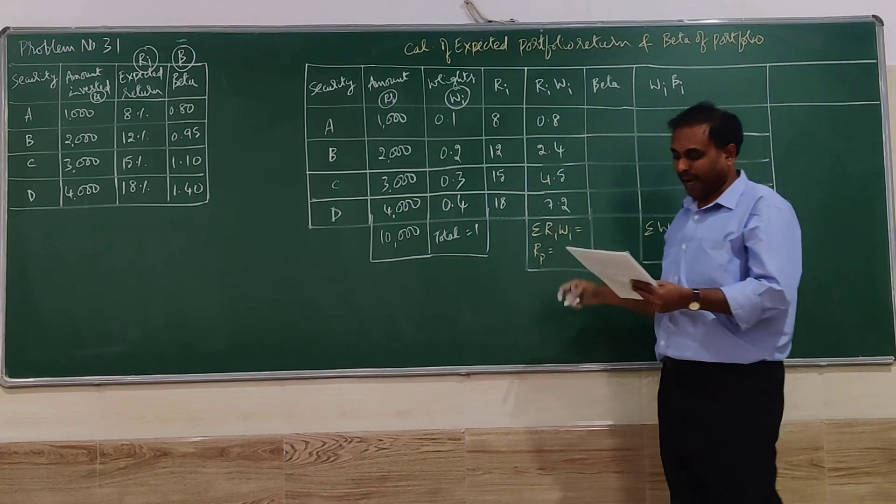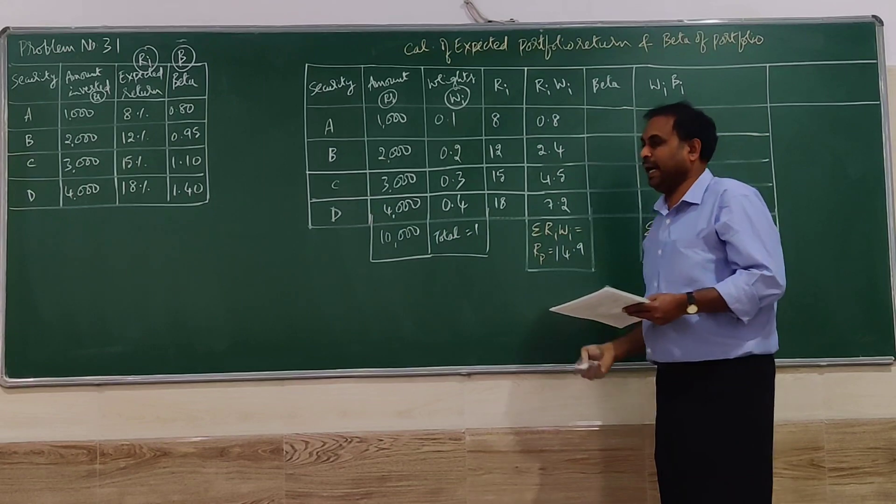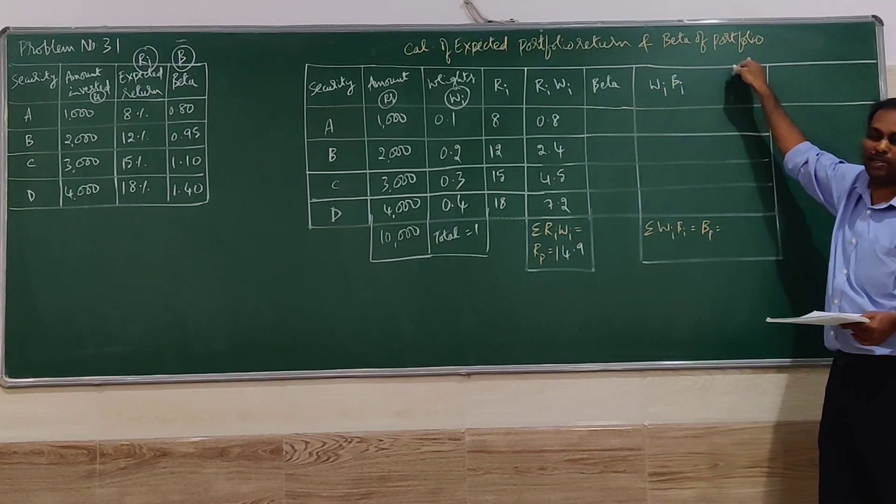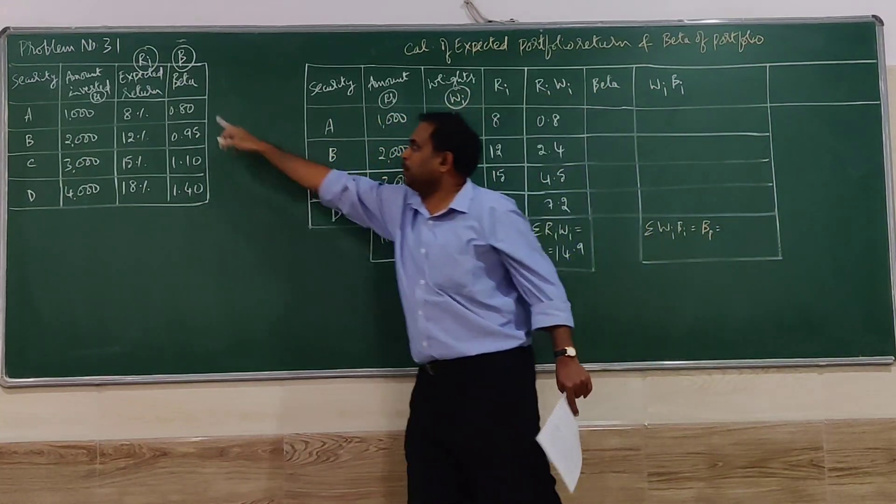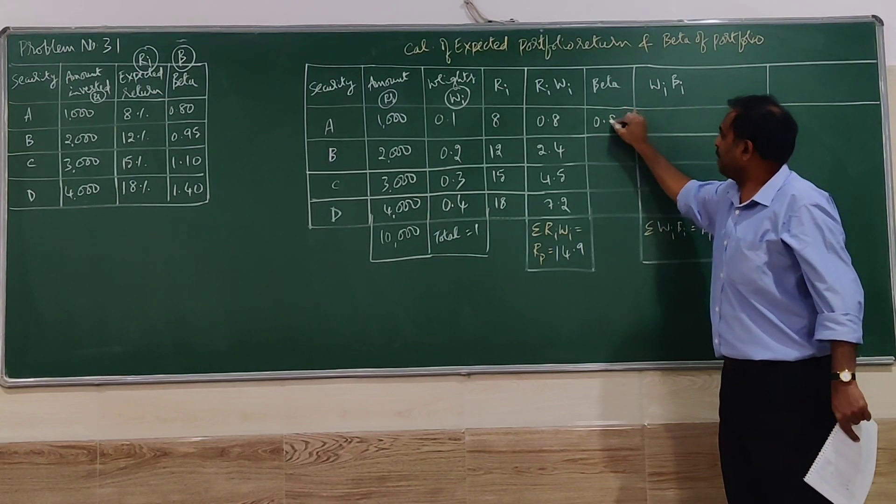Total of this, summation of ri and wi, or we can call it as the expected portfolio return rp. If you add this, you are going to get 14.9. Next, we are going for the second part of it, that is beta of portfolio. For that, let me substitute the beta values given in the problem.